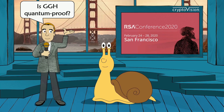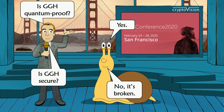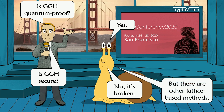Is GGH quantum proof? The answer is yes. But is it also secure? The answer is no — it has been broken with a method that has got nothing to do with quantum computers. So it's not really a method that will be used in practice. But there are other lattice-based methods that are still believed to be secure, and maybe we will see one of them used in practice in the near future.